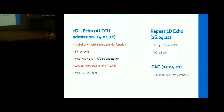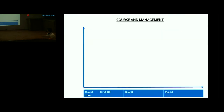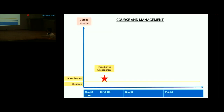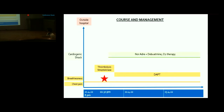Coronary angiography showed proximal LAD stenosis of 70%. Course and management: chest pain occurred on 21st April at 8 PM; the patient was taken to an outside hospital and thrombolyzed at 10:30 PM. Dual antiplatelets and anticoagulants were continued. Cardiogenic shock developed at the outside hospital and the patient was managed on noradrenaline, dobutamine, and oxygen therapy.